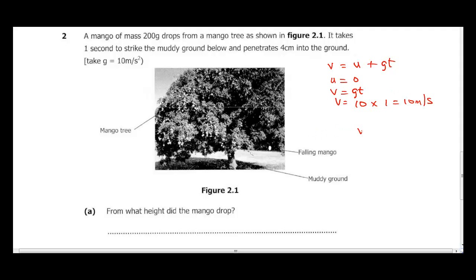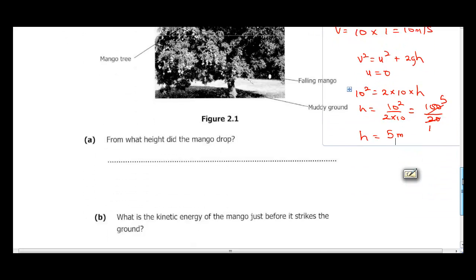Our height is v squared equals u squared plus 2gh. Also know that your u is at zero, so v squared, that's 10 squared, equals 2 times gravity times height. Therefore your height is 10 squared over 2 times 10, which gives us 100 over 20. 20 into 100 is 5, so our height is 5 meters. That is exactly the height at which the mango fell from.